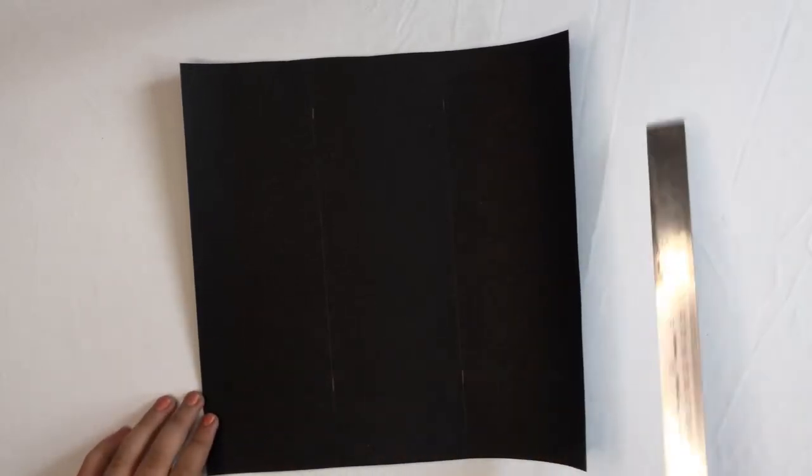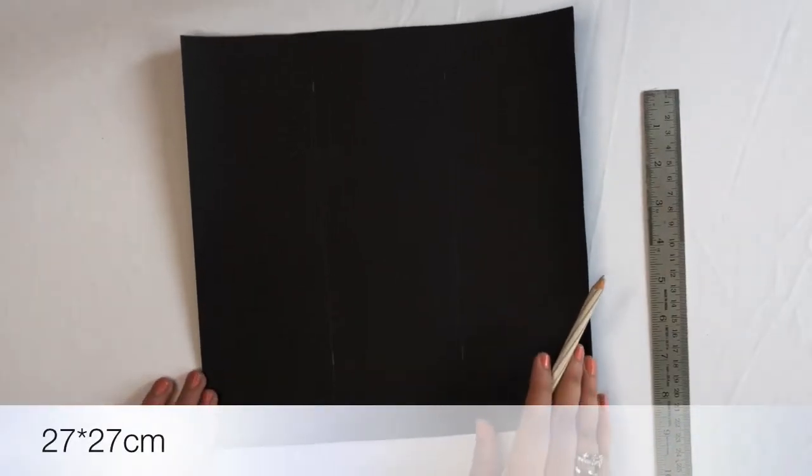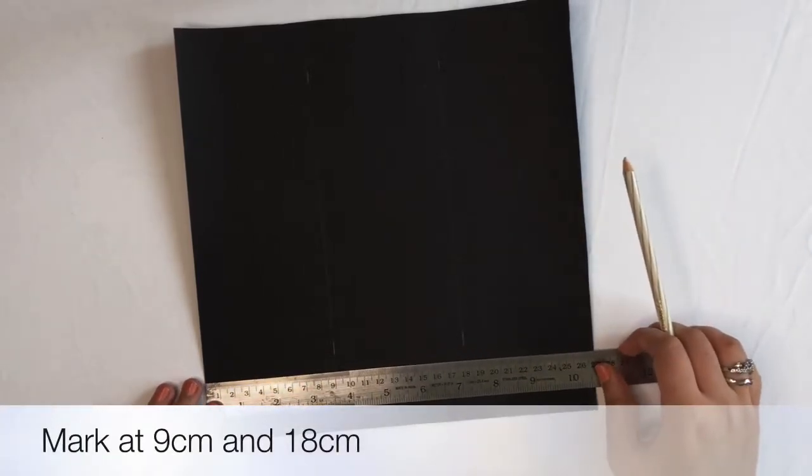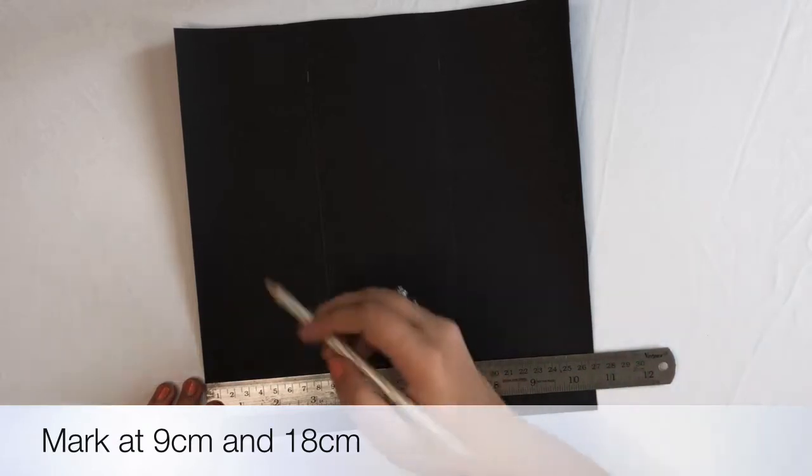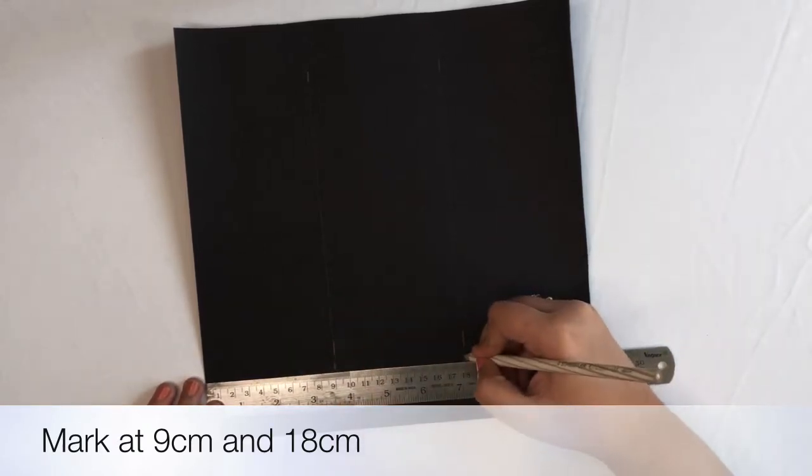Now let's start with the method. Here I've taken the black piece of paper which is of size 27 centimeter by 27 centimeter. We are going to mark on this at 9 centimeter and 18 centimeter.